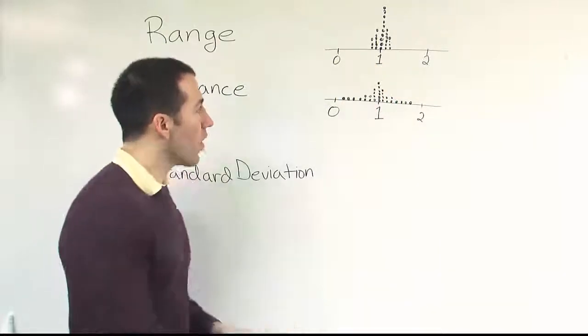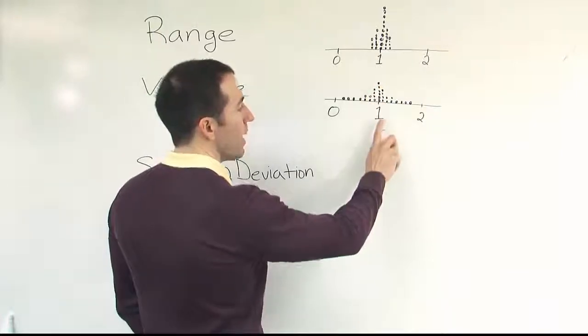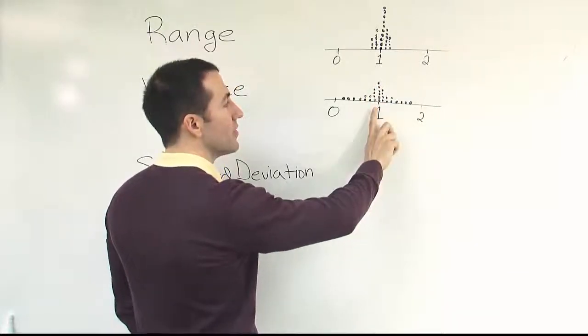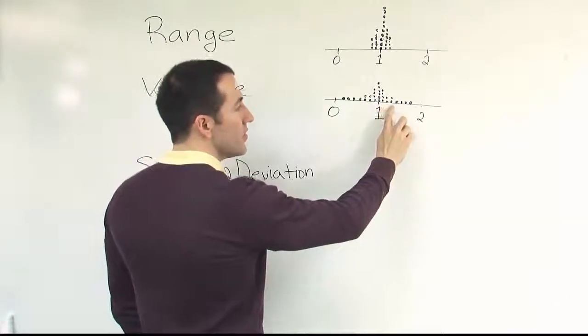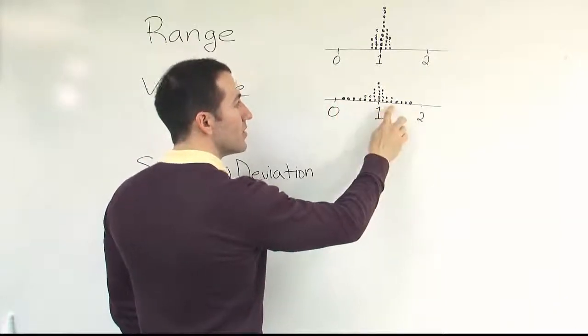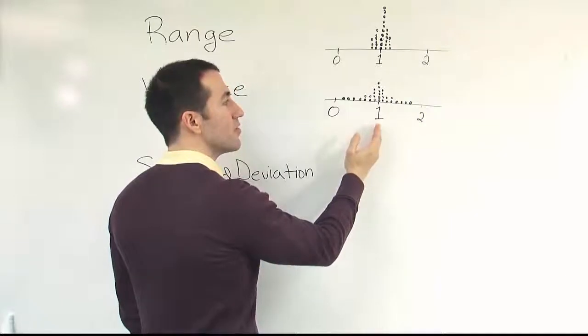But then look at this data set. It also has an average of one inch. Remember, average is where you'd have to stick your finger to balance out the data set. So you can tell this is the average of the set. But you see that there's far more variation, far more deviation from this center part.